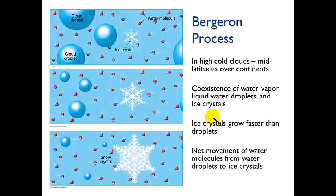The key here is that this process occurs in the higher, colder parts of clouds in the mid-latitudes over continents and over oceans as well. So the key here is that they have to be cold. It has to be clouds that are tall enough that you have a high part that's very cold. And in that cold part there's the coexistence of water vapor, liquid water droplets, and ice crystals.